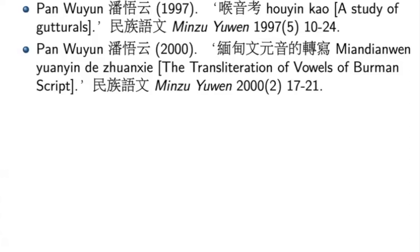Minzi Yuan is a particular publication because they don't have a volume number — they just have the year. So when citing Minzi Yuan, you give 1997 as a kind of volume number, even though of course there haven't been a thousand volumes of Minzi Yuan.